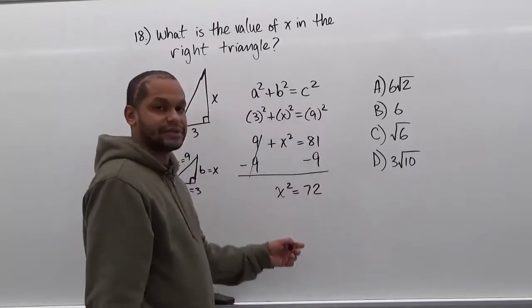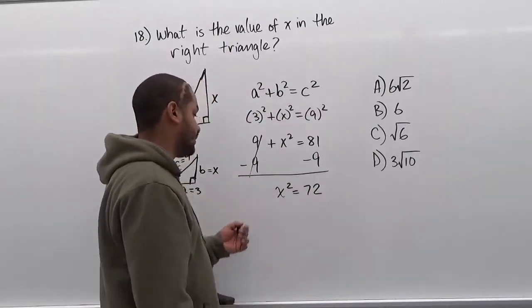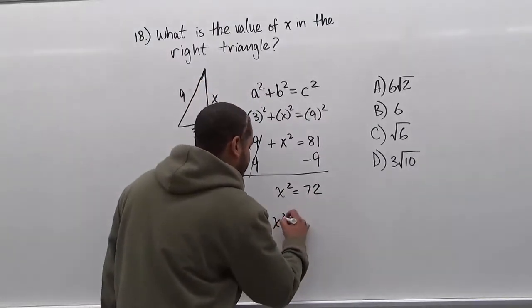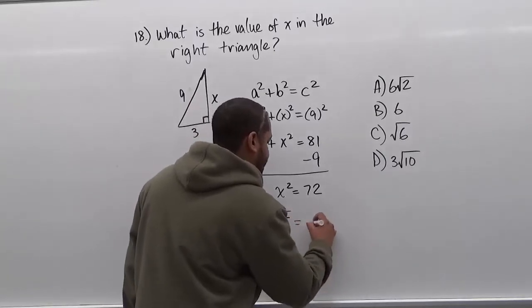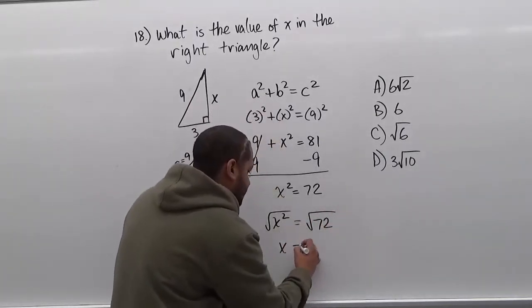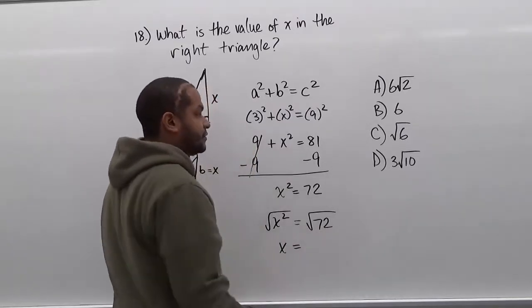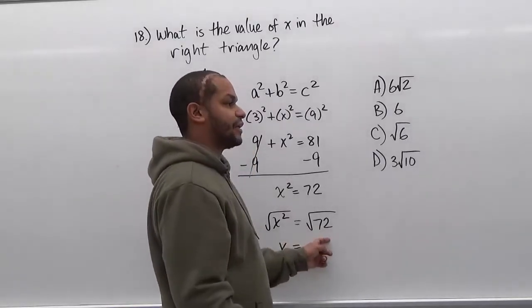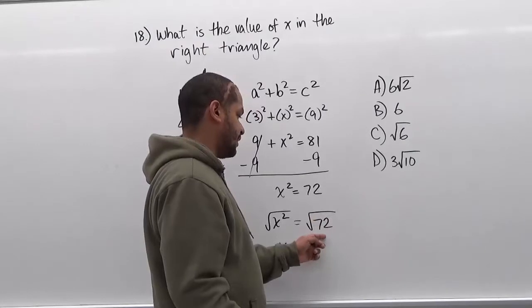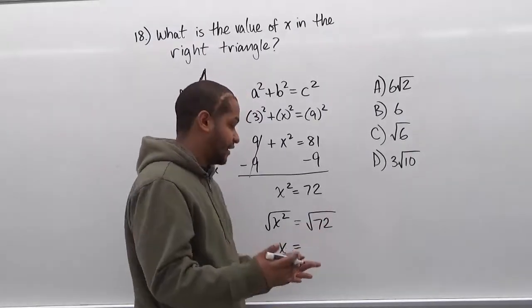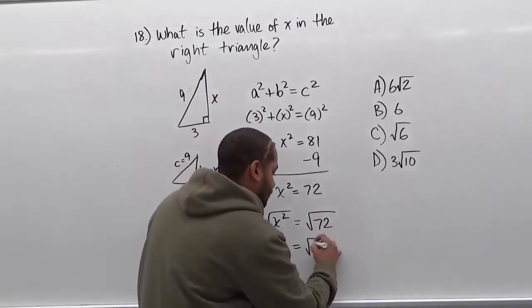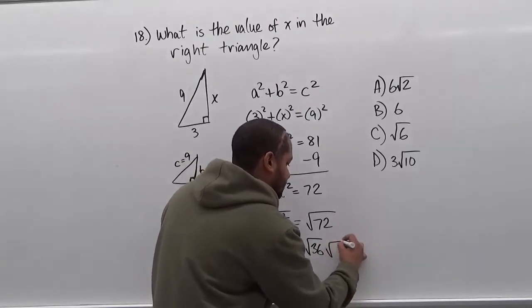Now the final step is to take the square root of both sides. When we take the square root of both sides, we get x = √72. We know that the perfect square that divides 72 is 36, because it's exactly half of it. So we have √36 × √2.